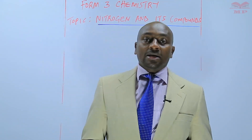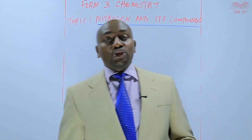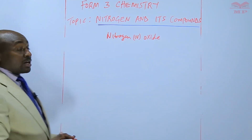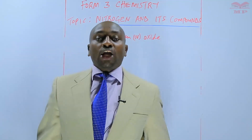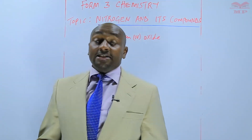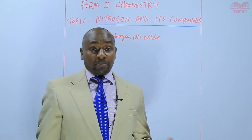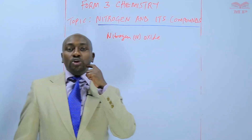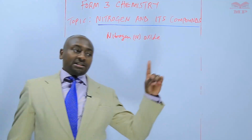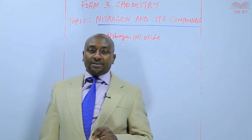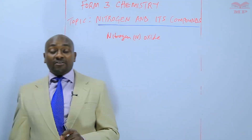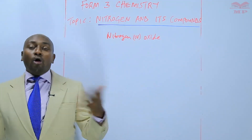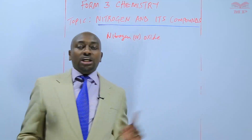Today we are going to discuss one of the oxides of nitrogen, and this is nitrogen(IV) oxide. Nitrogen(IV) oxide, being one of the oxides of nitrogen, is prepared by the action of concentrated nitric acid on copper turnings. The method of preparation is almost similar to that of nitrogen(II) oxide — the only difference is that for nitrogen(II) oxide we use dilute nitric acid on copper turnings, but here we use concentrated nitric acid.